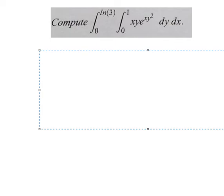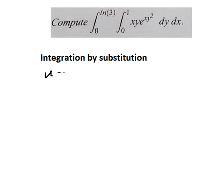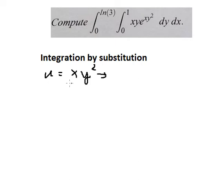So I will use integration by substitution. I will put u equal to s y squared in here, because this is about dy, so that means y will be the variable in here. First derivative for both sides: the first derivative of y squared equals 2y, and we have s in here and we have dy. Because we don't have the number 2 in here, we need to divide both sides by number 2.